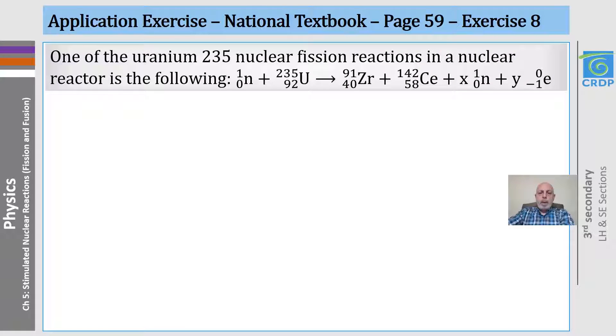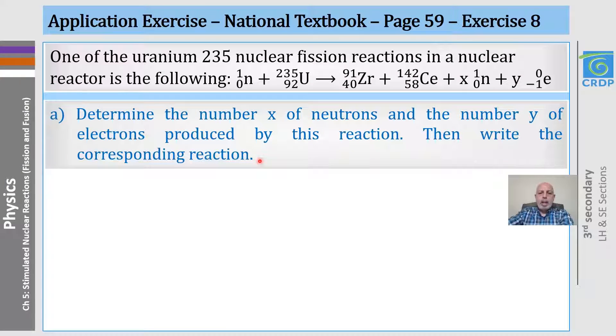Now, let's do an exercise from the national textbook. One of the uranium-235 nuclear fission reactions in a nuclear reactor is the following, and they give us the equation. Then the first question is, determine the number X of neutrons and the number Y of electrons produced by this reaction, then write the corresponding reaction.